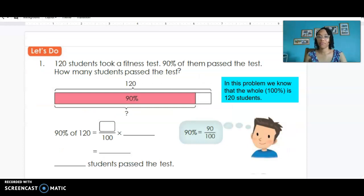Let's try one more new problem. 120 students took a fitness test. 90% of them passed the test. How many students passed the test? Once again we're given the amount that represents the whole quantity. We know the whole is 100% and we know a percentage of a smaller group, but we're looking for the quantity that corresponds with that percentage. So let's look at our picture. The whole thing is 120 people, but 90% of that whole is a quantity that we don't know yet.